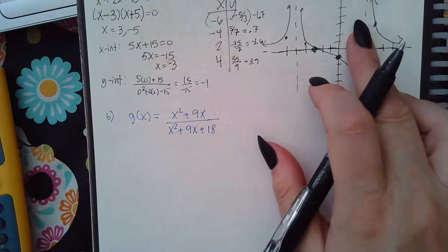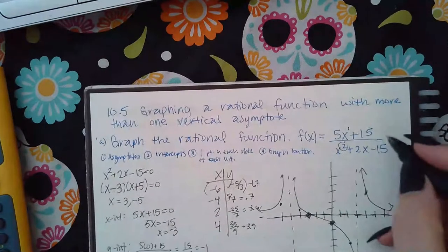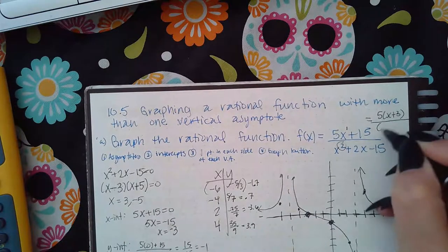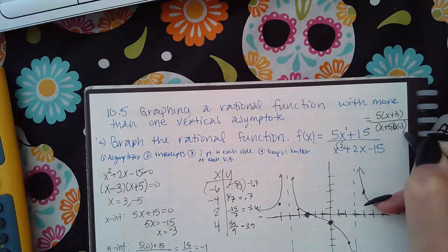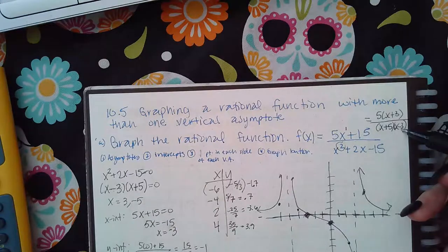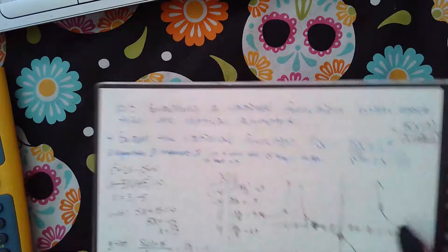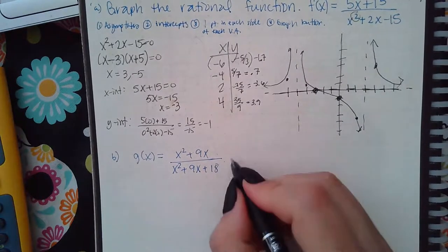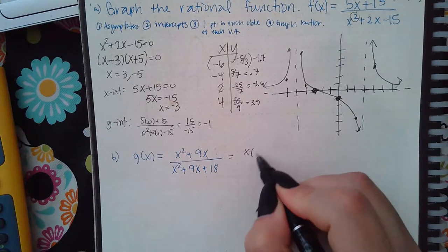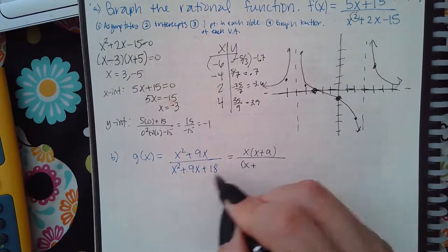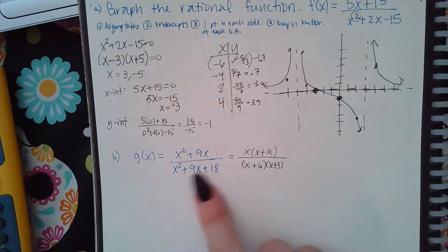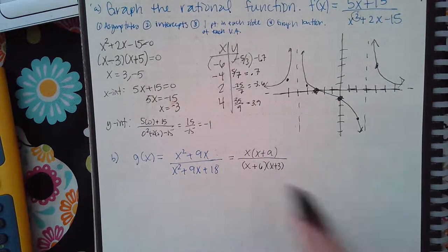That one actually had a potential hole — watch what happens when I factor it. I get five x plus three over x plus five times x minus three. Nothing cancels because this is x plus three and that's x minus three, so nothing canceled. It couldn't reduce, so I was okay in graphing that one. On this next one, I recognized I can factor it. Eighteen would be six and three, but nothing is going to cancel, so you don't have to worry about a hole.